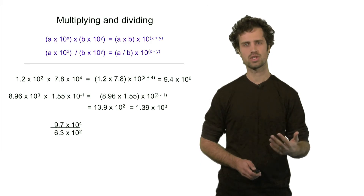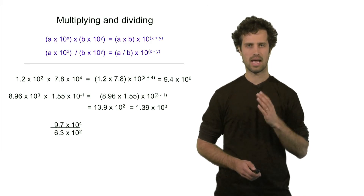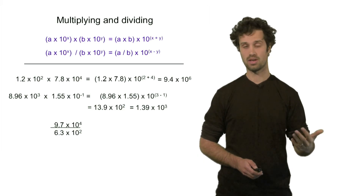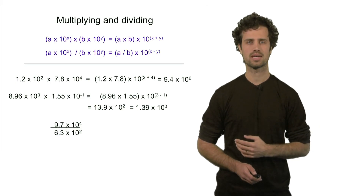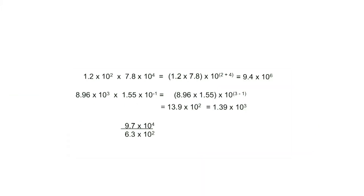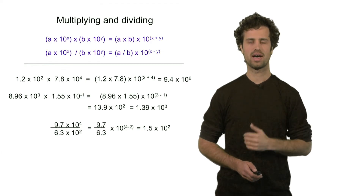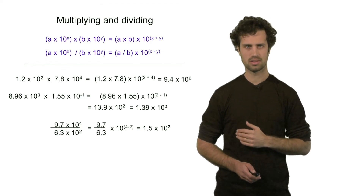A last example — a division. I'd like to divide 9.7 times 10 to the fourth by 6.3 times 10 to the second. I divide 9.7 by 6.3, and then multiply by 10 raised to the power 4 minus 2, which is 2. So I get 1.5 times 10 to the power 2.